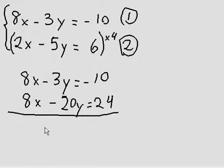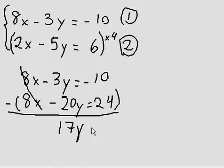So now I want to subtract the bottom equation from the top equation. So 8x minus 8x is 0, they cancel out. Negative 3y minus negative 20y will be equivalent to 20y minus 3y, which is 17y. Negative 10 minus 24, negative 34.